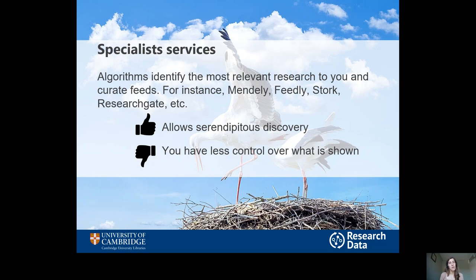If you're using ResearchGate or Academia.edu to network with colleagues and keep up to date with what they're doing, those sites have algorithms that will help you find articles that might be relevant. There are also specialist services that just focus on suggesting literature to read, such as Feedly, Stork, and others. If this is something you might find useful, experiment with it — try signing up, see if it's working for you and whether it will be useful in the long term. The algorithms are really helpful because you don't need to know what you're looking for before it's suggested to you — they use your past behaviour to inform future suggestions. However, that also means you have less control over what's being shown. So on the one hand you can find serendipitous discoveries, but on the other hand you can't have the specificity of following a particular journal, article, or search term.